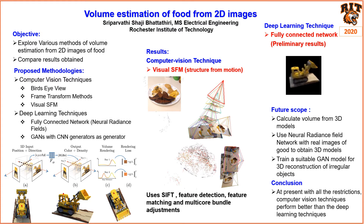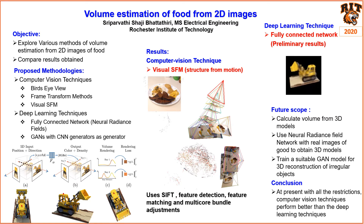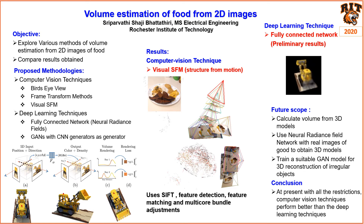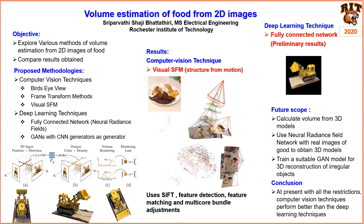The deep learning technique which was implemented is a fully connected network referred to as neural radiance field. It is trained to reproduce input views of a scene using a rendering loss. The network maps from spatial location and viewing direction to color and opacity for volume rendering. These networks need to be optimized and can take from a few hours to a few days.